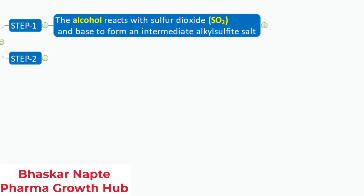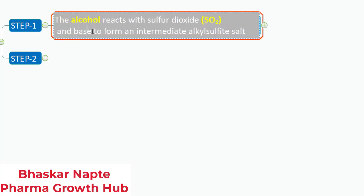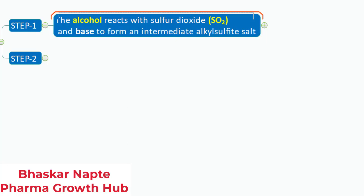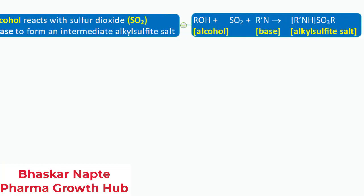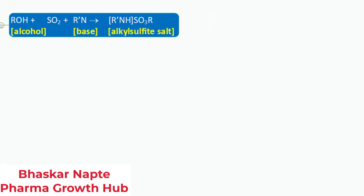During the reaction when you analyze your sample for water content, the alcohol present in the KF reagent, the sulfur dioxide, and the base, that is imidazole or pyridine, react with each other to form an alkyl sulfite intermediate. Let us understand the reaction mechanism. Alcohol plus sulfur dioxide plus base results in the formation of alkyl sulfite, that is SO₃. Sulfite stands for SO₃. This is the intermediate salt we get.